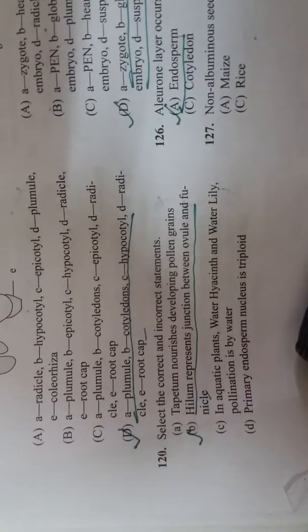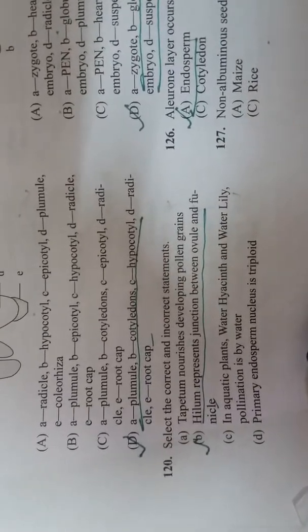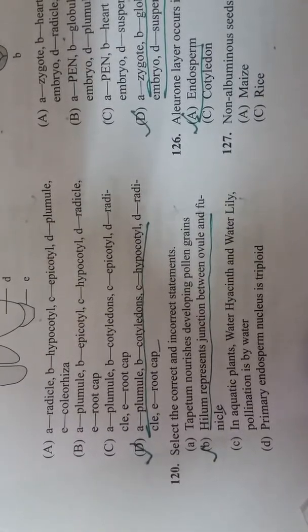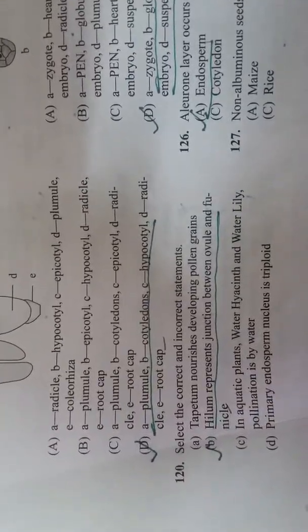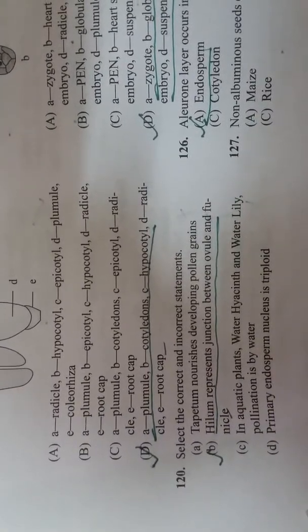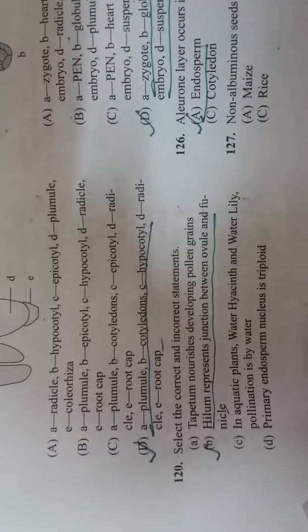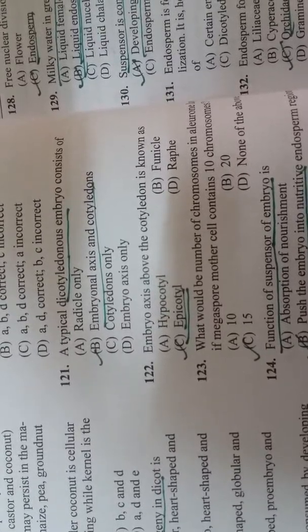Select the correct and incorrect statements. In this, B, A, B, C, D is correct. A, B, and D are correct, C is incorrect. Tapetum nourishes developing pollen grains. Hilum represents junction between ovule and funicle. D is correct: primary endosperm nucleus is triploid. A typical dicotyledonous embryo consists of embryonal axis and cotyledons.